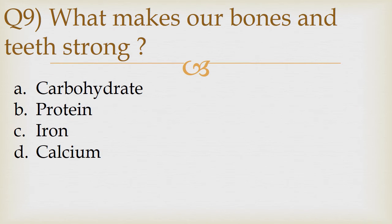Question number 9. What makes our bones and teeth strong? Option A: Carbohydrate. Option B: Protein. Option C: Iron. Option D: Calcium. The correct answer is Option D — Calcium.